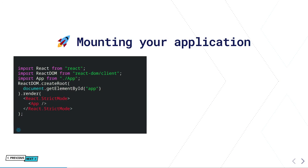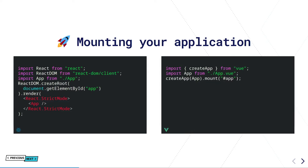Mounting your application: once you've built something you want to actually use it in the browser. On the React side, you need React DOM and React — you create a root by passing it a DOM element, and then call render with the component you want to render into that HTML element. On the Vue side it's very similar but a little more succinct — you import createApp, call createApp for the app component, and then call mount, passing it a DOM selector.